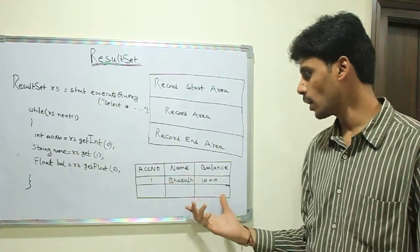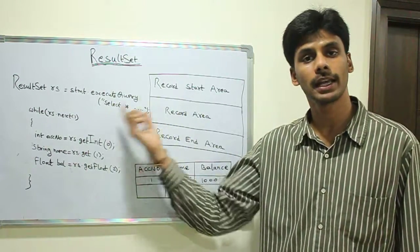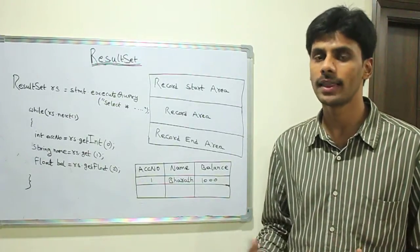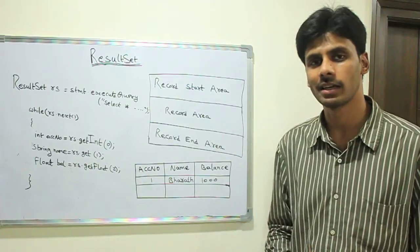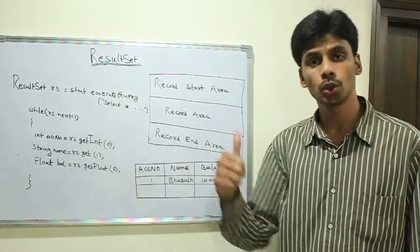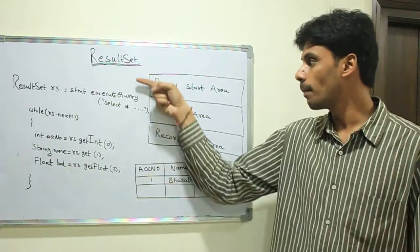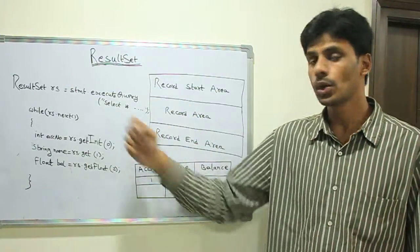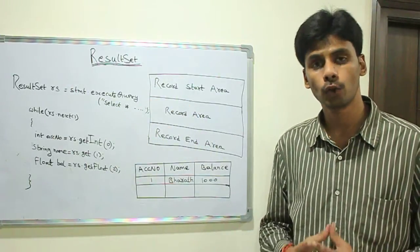We loop through all these rows and then display or process them as required. The next method does two things: one, it moves the pointer to the next row, and two, it returns a boolean value of true if there is a next record.